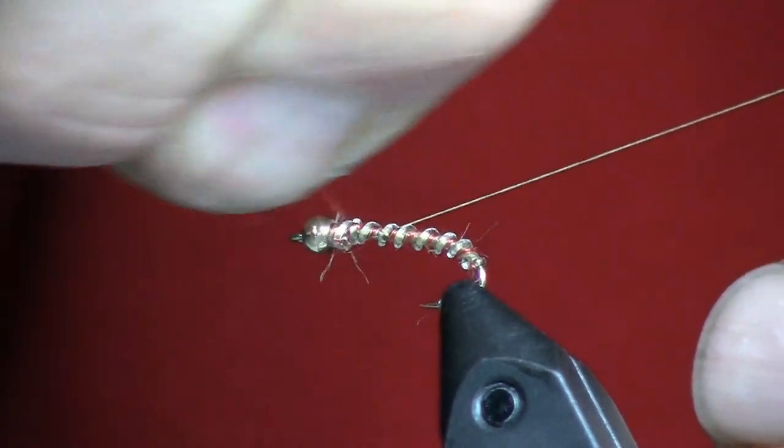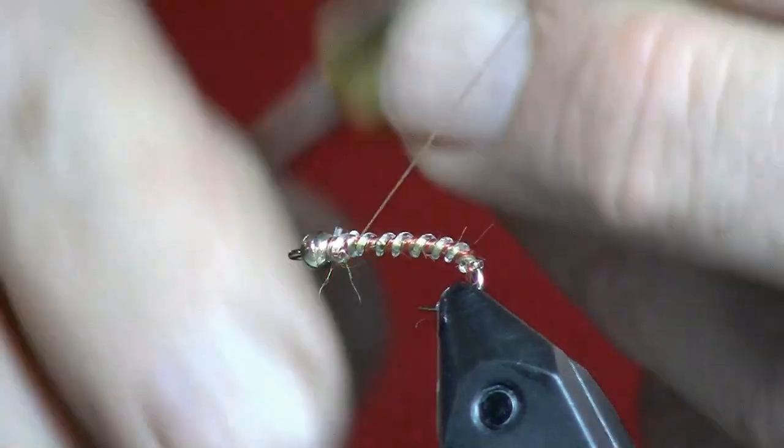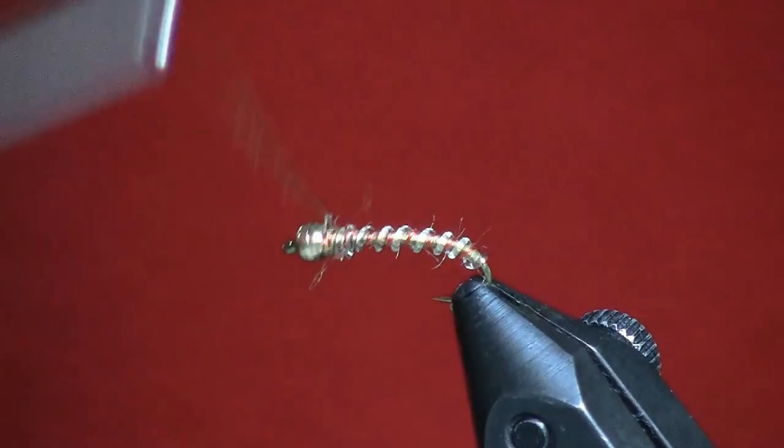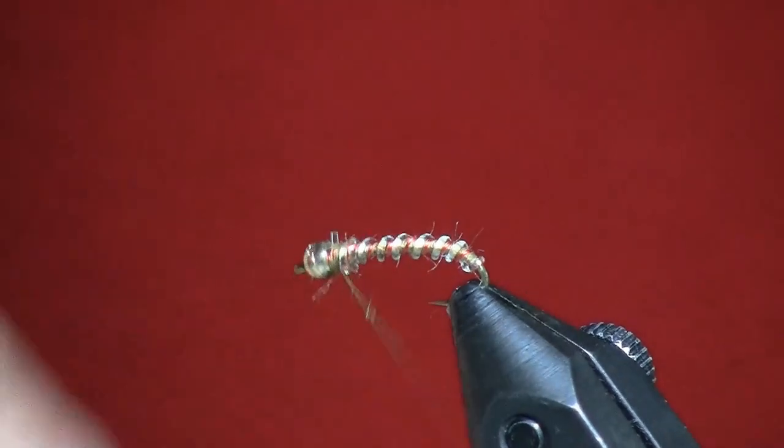I must have gotten a pretty good piece of, there we go. Now I'm going to build a thorax on this thing. And the thorax on these bugs is almost always of a dark color.